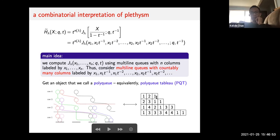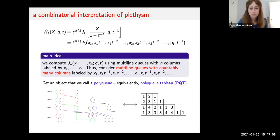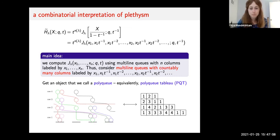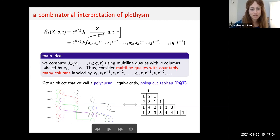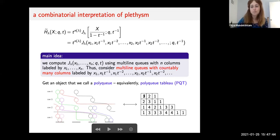[Question about ordering columns:] Yes, we do put in an order, but we multiply by the t-analog of the number of ways of permuting those columns. So I can fix a deterministic order and then multiply by 1 + t times 1 + t + t² and so on — the t-analog of 3! because there are 3! ways of permuting three columns.